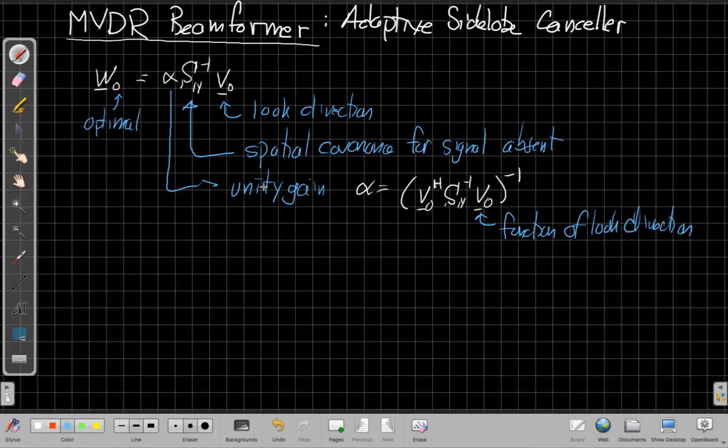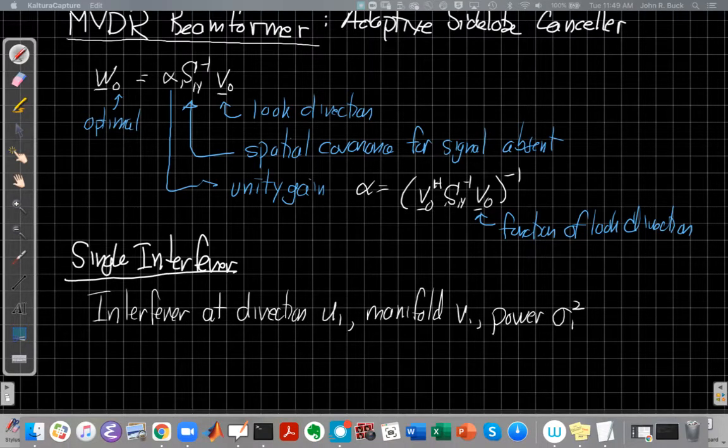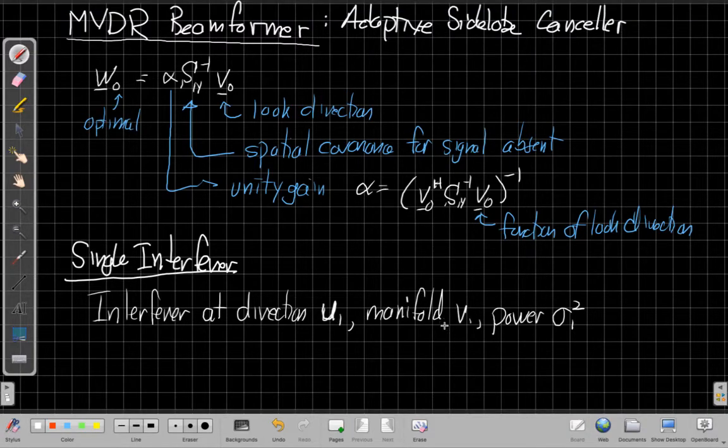We're going to have a two-part video today. Here's our big picture plan: we're going to focus on the single interferer case. So in this case, we have an interferer coming from some direction, we'll call it u sub 1. Its manifold vector is v sub 1, and its power is sigma 1 squared. We're going to see how can we interpret what is going on inside this, particularly the inverse of Sn.